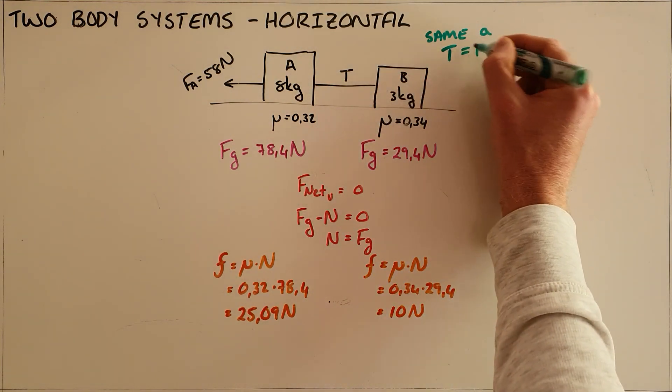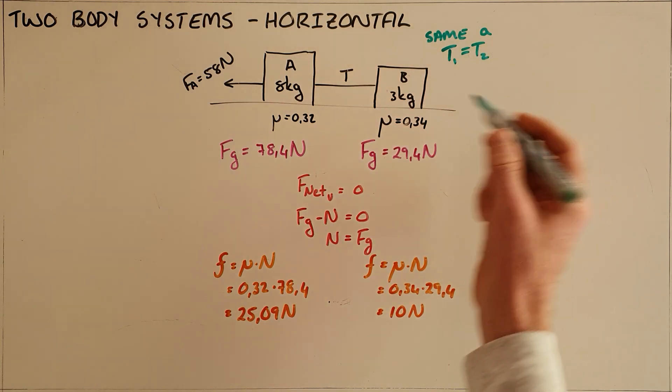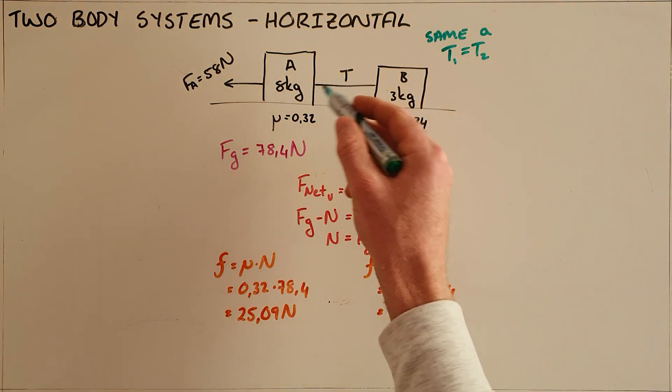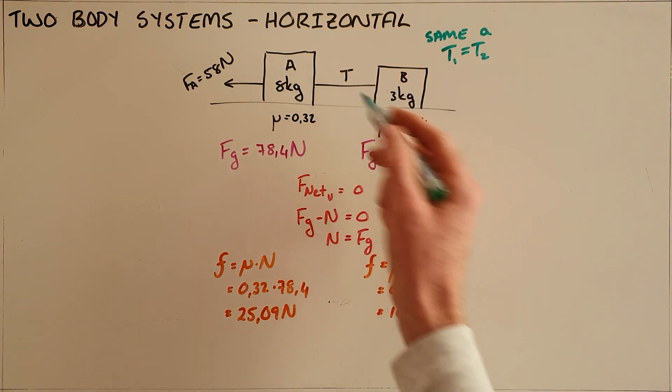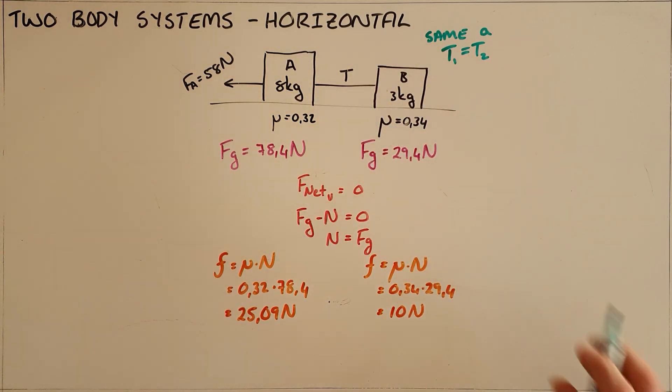feels is equal to the tension that the other object feels. Sometimes we refer to that as T1 and T2, but it is the same rope, so the tension remains the same.